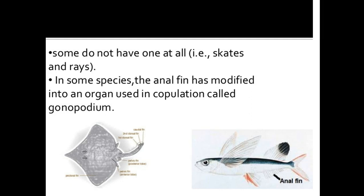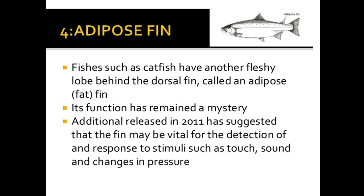In some species, the anal fin is modified into an intermittent organ — a copulatory organ used in internal fertilization. When the anal fin is modified for copulation, it is known as a gonopodium. Through the gonopodium, sperm can be deposited into the female reproductive system, which is internal fertilization.